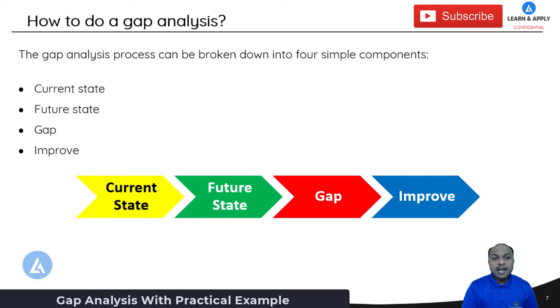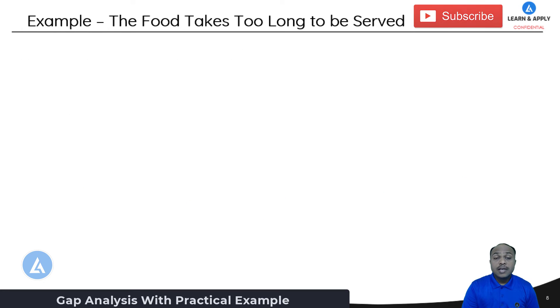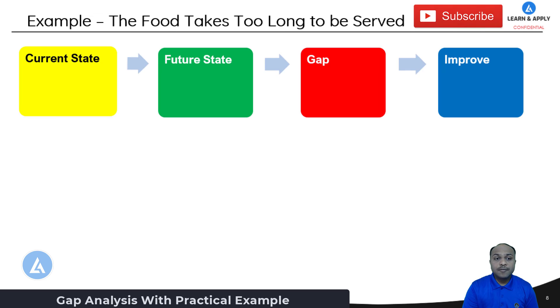Let's take an example to understand this gap analysis process or how to conduct this gap analysis in a most effective way. The example is the food takes too long to be served. Now let's apply the gap analysis process on this problem so that we can solve this problem. As we have seen it consists of four important components for the gap analysis process. Current state, future state, identify the gap between these and then plan the actions to move the current state to the future state.